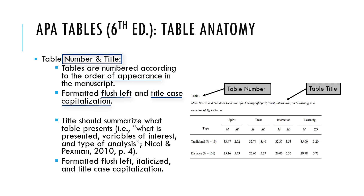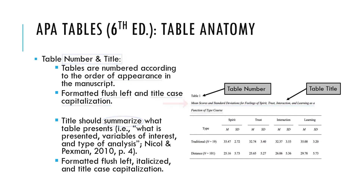The title should appear on the next line of the table, flush left, under the table number. It is italicized and uses title case capitalization. The title should summarize what information is presented in the table, such as variables of interest and types of analyses.